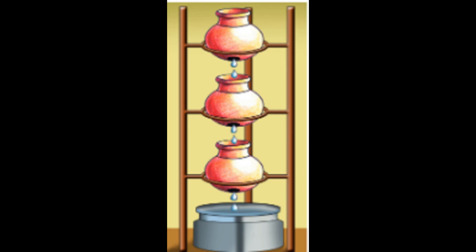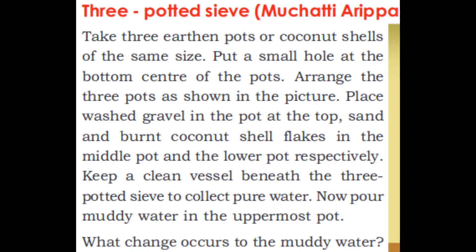Put a small hole at the bottom centre of the pots. Arrange the three pots as shown in the picture. Place washed gravel in the pot at the top, sand in the middle pot, and burned coconut shell flakes in the lower pot respectively. Keep a clean vessel beneath the three pots to collect pure water.